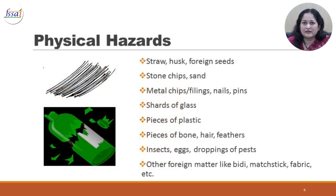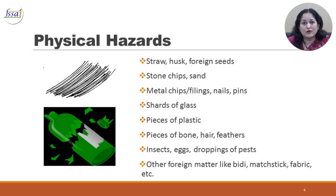Physical hazards include straw, husk, foreign seeds, stone chips, sand, metal chips, filings, nails, pins, shards of glass, pieces of plastic that may fall off from processing equipment or from packaging or due to improper handling, pieces of bone, hair, feathers, insects, eggs, droppings of pests, and other foreign matter like beads, matchsticks, fabric, etc.